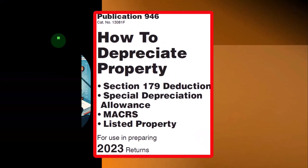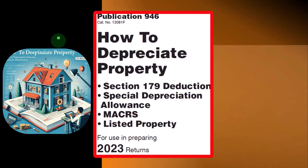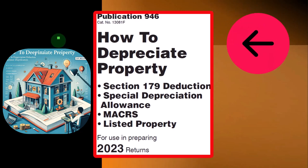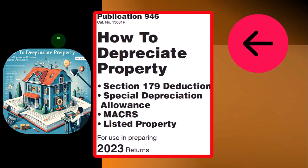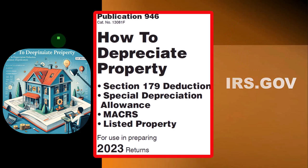Most of this information can be found in Publication 946, How to Depreciate Property, Section 179 Deduction, Special Depreciation Deduction, MACRS Listed Property, and more. Tax Year 2023, which you can find on the IRS website at irs.gov.